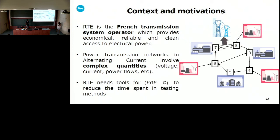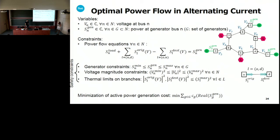I'll explain briefly what an optimal power flow problem is. Power transmission networks can be modeled as oriented graphs where nodes represent electrical demand or generation points, and arcs represent transmission lines. The objective is to find an optimal dispatch which meets the demand, minimizes the cost, and satisfies physical laws and engineering constraints. Mathematically, there are two types of complex variables: one voltage at each bus and one power at each generator bus. There are power flow equations at each node (power in equals power out). Powers on the lines are quadratic functions of the voltages and only involve Hermitian products. There are also safety constraints including thermal limits on branches, involving polynomials of degree four in voltages, and the objective is to minimize real generation costs.